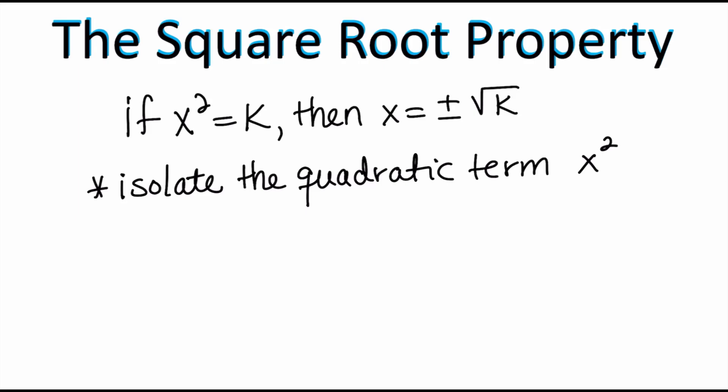Hi everyone, in today's video we're going to learn another method of solving a quadratic equation. It is called the square root property. In order for us to use the square root property, you have to make sure that you have isolated the quadratic term. The square root property says if x squared is equal to k, then x has to be equal to plus or minus the square root of k.